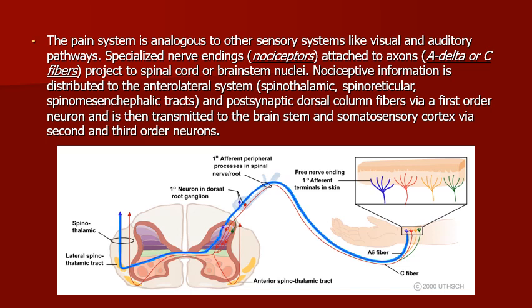The pain system is analogous to other sensory systems like visual and auditory pathways. Specialized nerve endings, or nociceptors, attach to axons — A-delta or C fibers — which project to spinal cord or brainstem nuclei. Nociceptive information is distributed to the anterolateral system and postsynaptic dorsal column fibers via a first-order neuron, and then transmitted to the brainstem and somatosensory cortex via second- and third-order neurons.